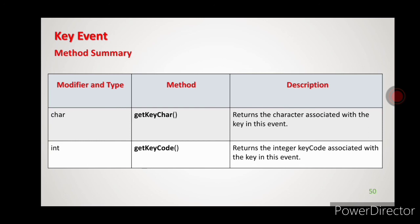Next are the methods. The key event class uses two methods: getKeyChar and getKeyCode. getKeyChar returns the character associated with the key in this event — when I press 'A', the key typed event will happen and it will return the character 'A'. getKeyCode returns the integer key code associated with the key in this event — it will return the associated ASCII code or binary code, whichever integer constant the key represents in that system.